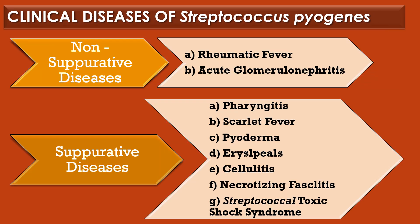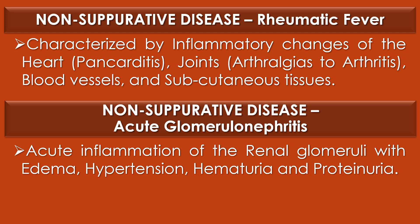Clinical diseases of Streptococcus pyogenes: Streptococcus pyogenes results in two categories of clinical diseases — non-suppurative diseases and suppurative diseases. Non-suppurative diseases include rheumatic fever and acute glomerulonephritis. Rheumatic fever is characterized by inflammatory changes of the heart (pancarditis), joints (arthralgia to arthritis), blood vessels, and subcutaneous tissues. Acute glomerulonephritis presents with acute inflammation of the renal glomeruli with edema, hypertension, hematuria, and proteinuria.